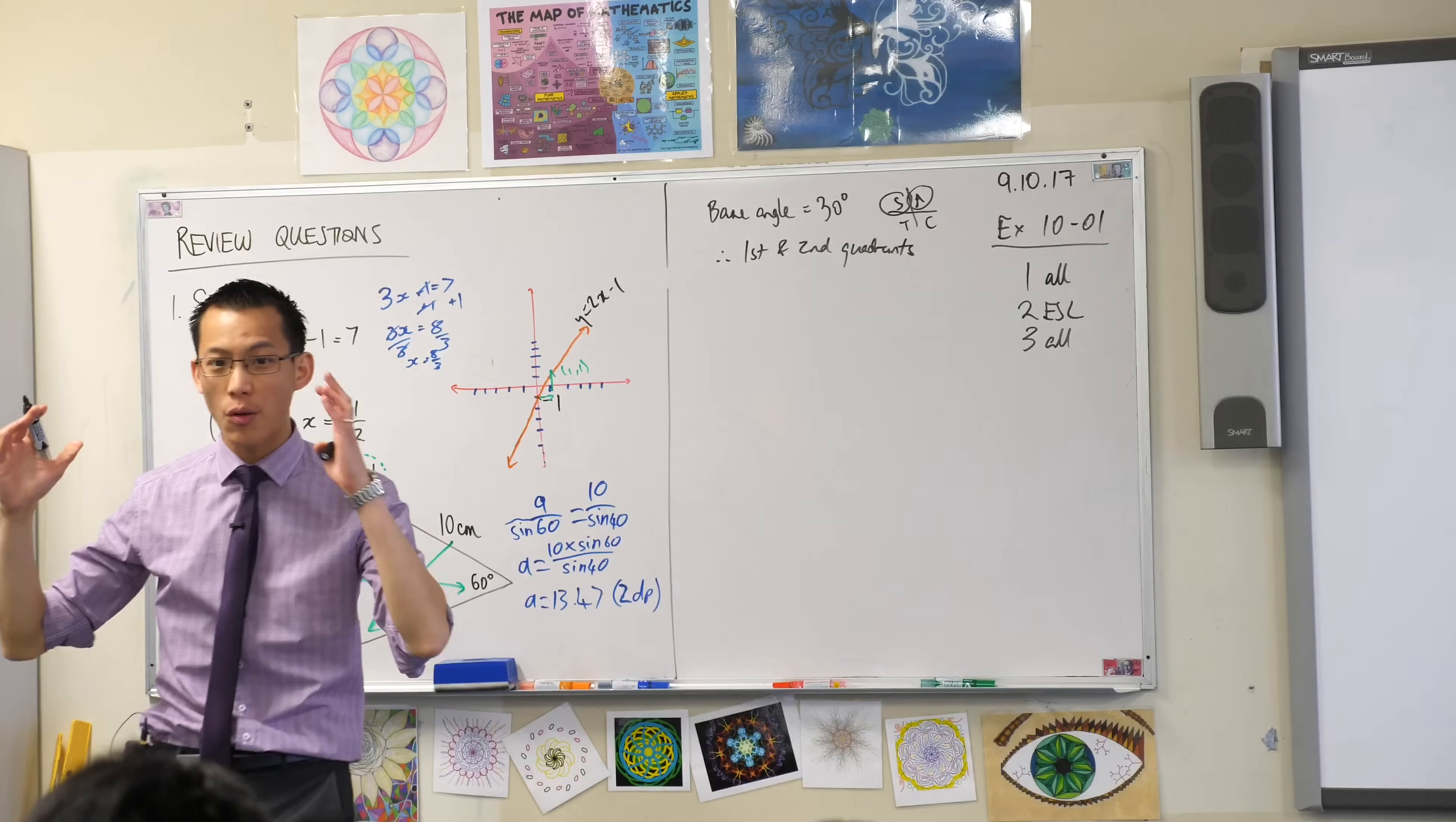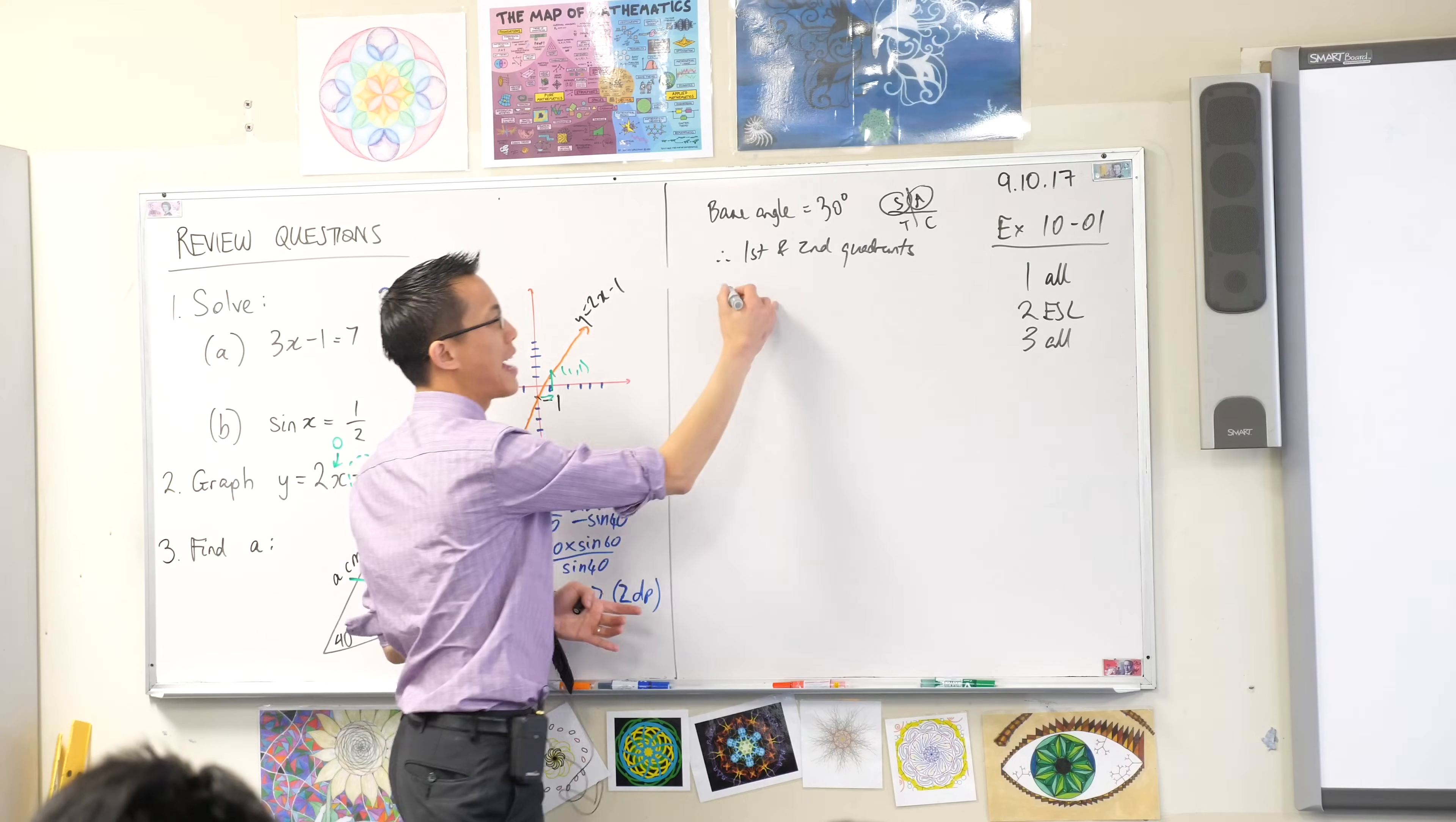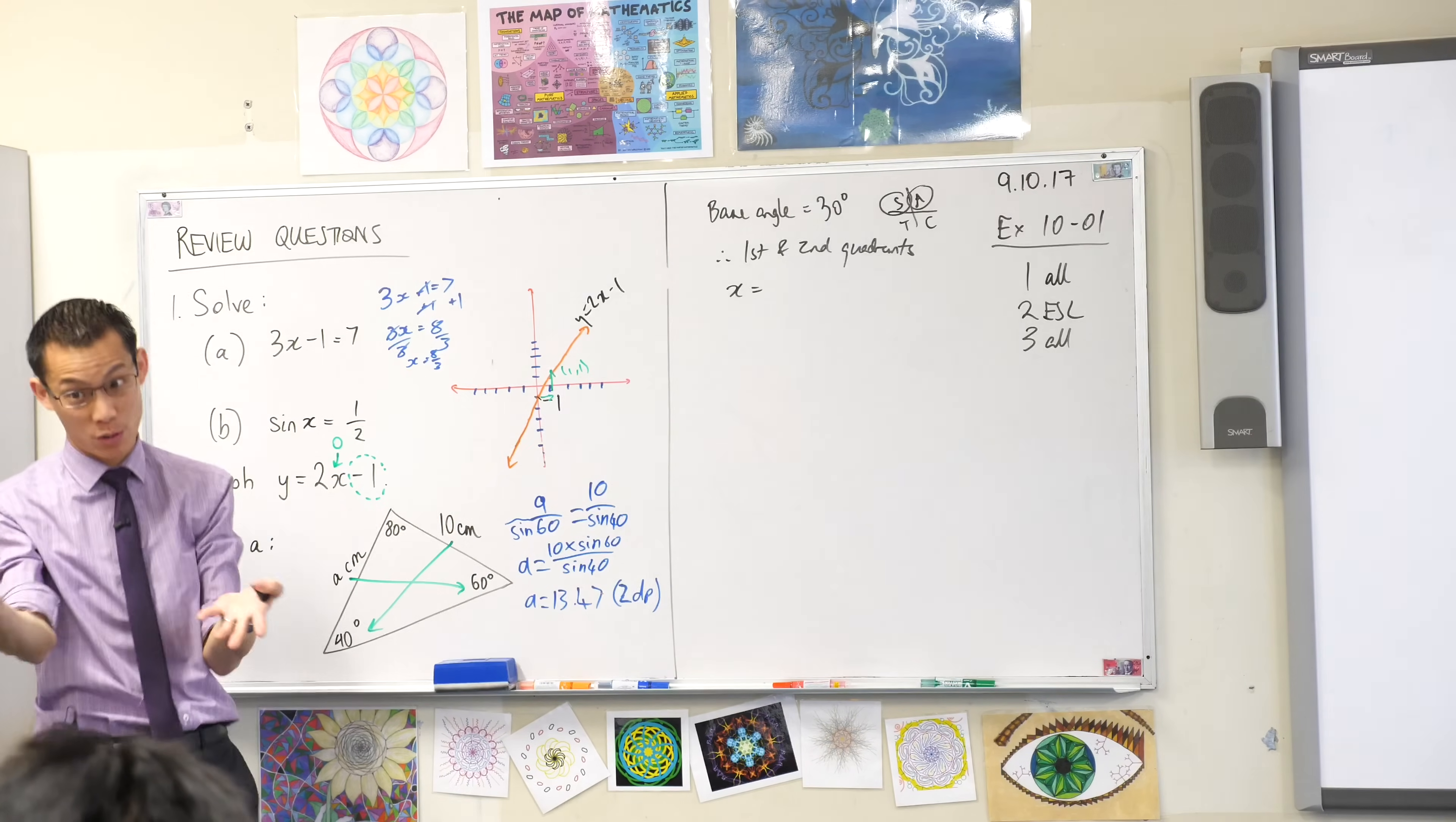So I want to look at what does the base angle, 30 degrees, what does it look like in those quadrants? That's what X is equal to. Okay? The first quadrant's an easy one. What's 30 look like in the first quadrant? It looks like 30.